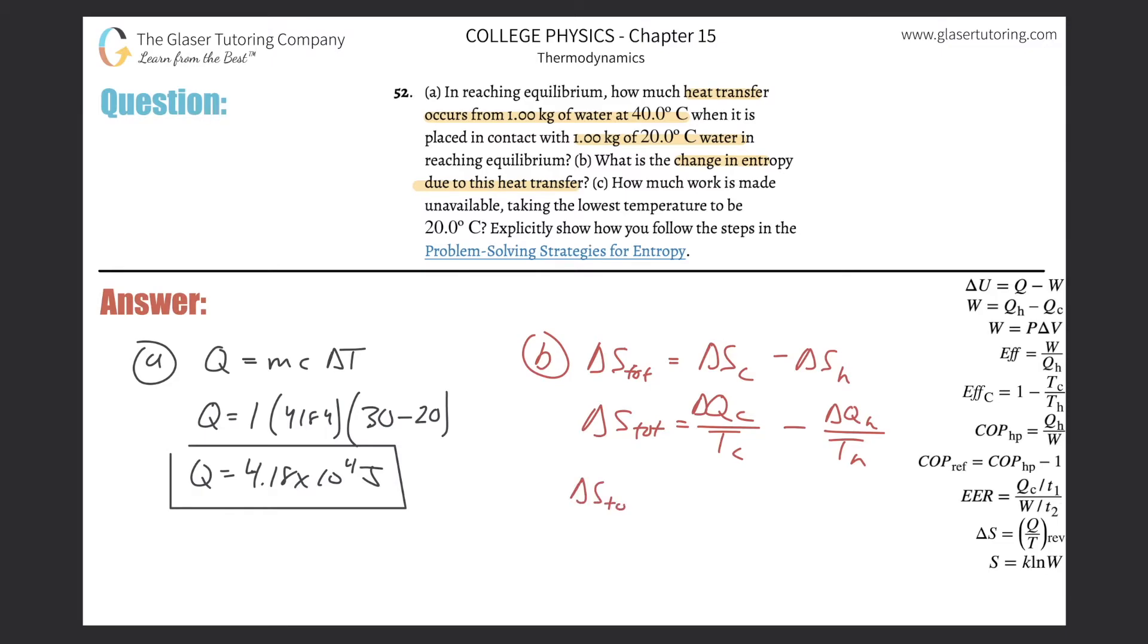Now all you got to do is just plug your stuff in. So this is the change in entropy will be equal to this value. That's what we found for 4.18 times 10 to the fourth divided by the temperature of the colder object, which was 20 degrees Celsius, but you know, we need that in Kelvin. So you got to add the 273 minus then 4.18 times 10 to the fourth because they're equal. The heat energy gained and loss is equal divided by then the temperature of the hotter object. So that's going to be 40 degrees Celsius. Remember, you need that in Kelvin.